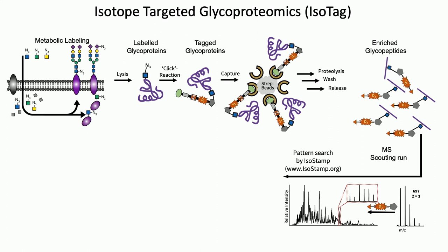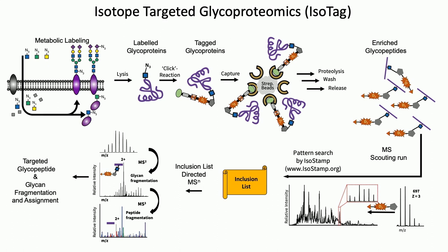The data get processed with this computational program to generate what's called an inclusion list — a list of all the glycopeptides that were found and precisely where they elute on the HPLC. Then we can do a second analysis of the same sample, and we know exactly where to look for the glycopeptides. The mass spectrometer can fragment them once or even twice to figure out exactly the sequence of the peptide and the sequence of the glycan that's attached to it. This is all the information that the glycoscientist wants to compare glycosylation patterns from one type of biological state to another.